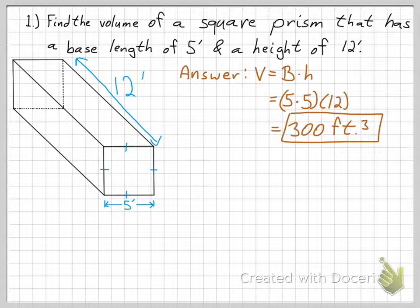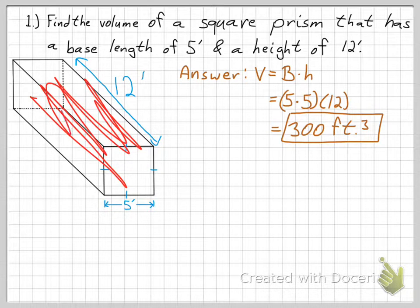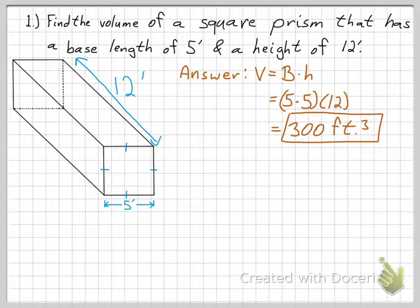And so, multiplying those all out, you get that the volume is 300 cubic feet, so the amount of three-dimensional space that can fit inside of this square prism is 300 cubic feet.